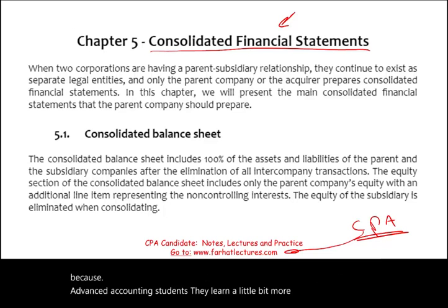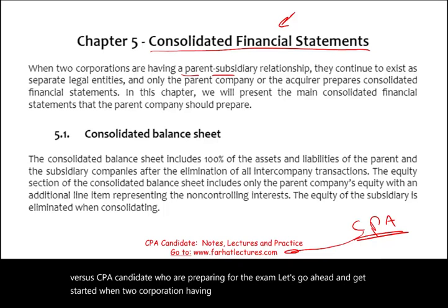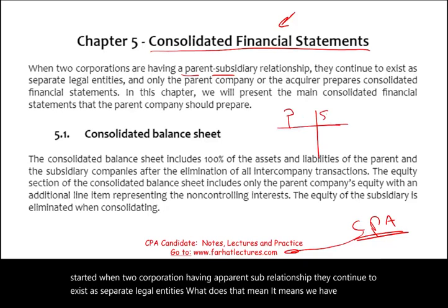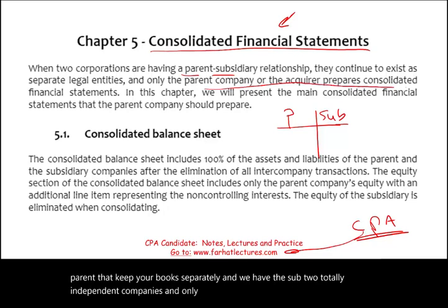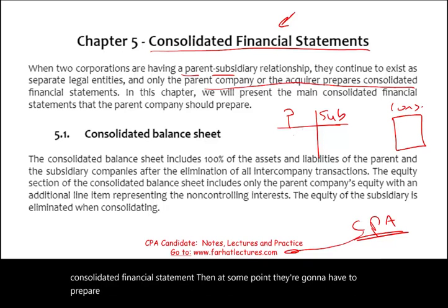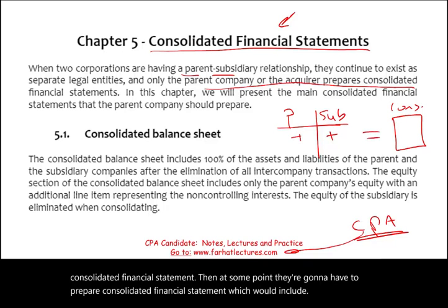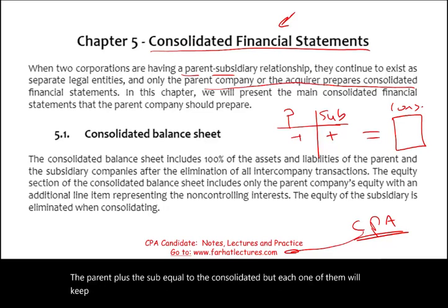When two corporations have a parent-subsidiary relationship, they continue to exist as separate legal entities. The parent keeps their books separately and the sub keeps theirs — they are two totally independent companies. Only the parent, or the acquirer, prepares a consolidated financial statement, which would include the parent plus the sub combined.